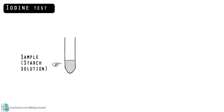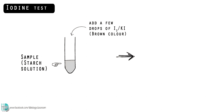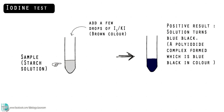To test the presence of starch, you just have to add a few drops of iodine in potassium iodide solution to the sample. If it turns blue-black, starch is present in the sample.